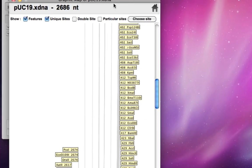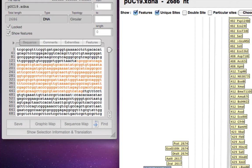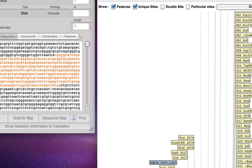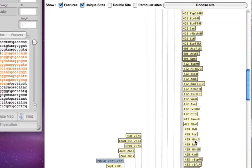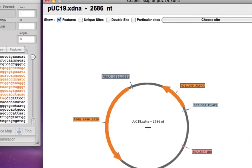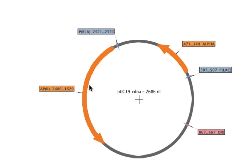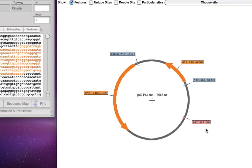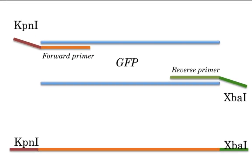I'll click on the graphic map for PUC19. All the enzymes in yellow are single cutters. I'll remove the unique sites so we can visualize PUC19. This is the ampR gene that codes for ampicillin resistance, and this is the alpha sequence — this portion codes for the N-terminal of beta-galactosidase, which is used for blue-white selection.